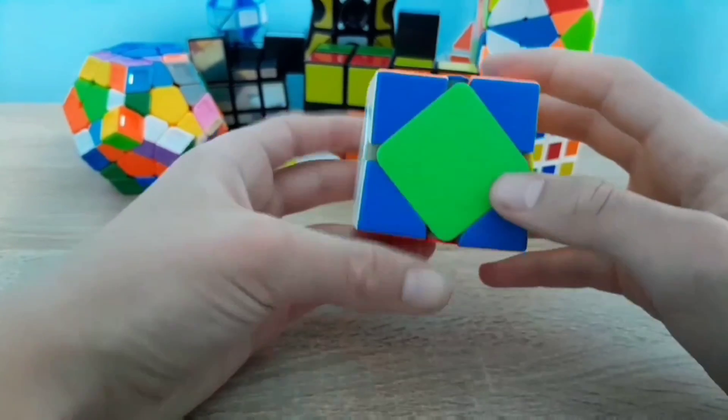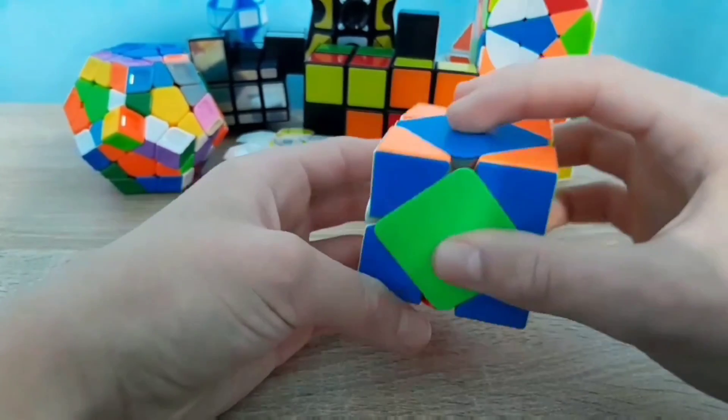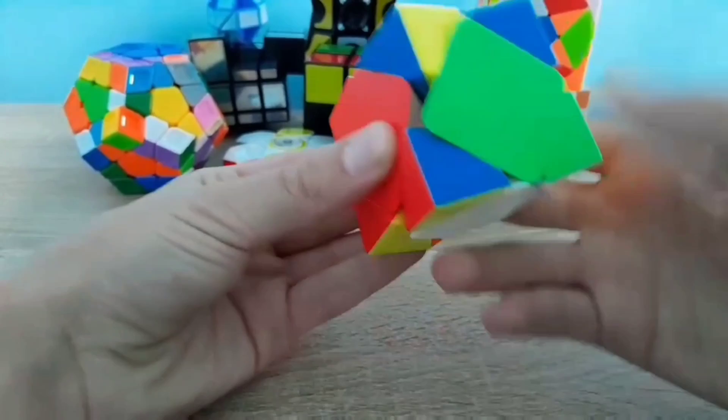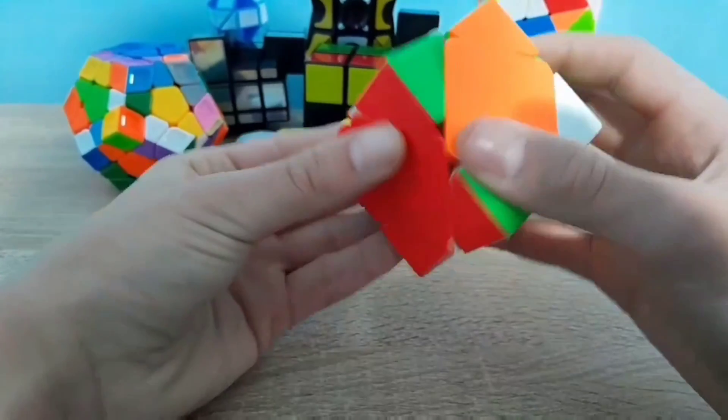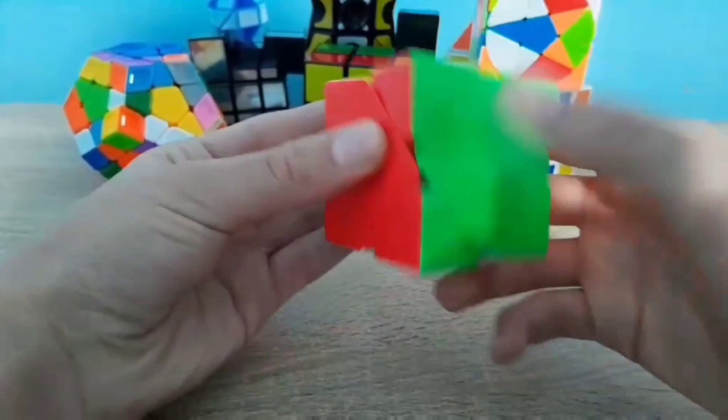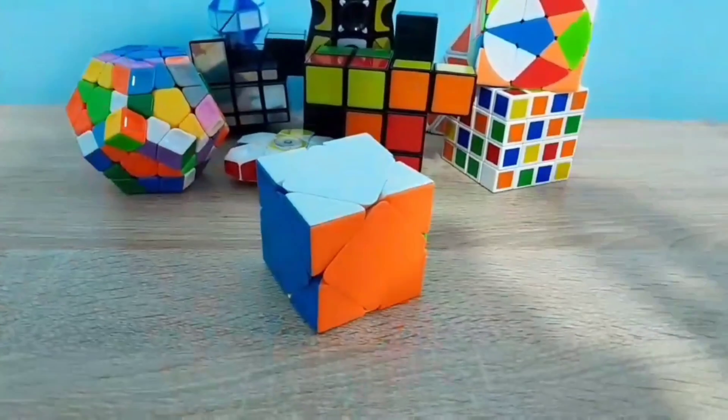The next move is to turn two solved colors to face left and right. To solve this cube, do the following moves. And your cube is solved.